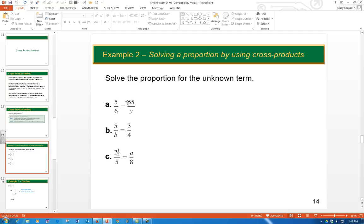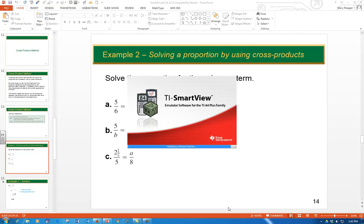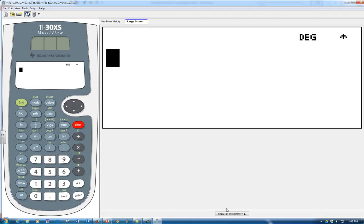We also want to take a look at one that has a mixed number in it just to make sure that you can do this. So we would need to take 2 1/2 times 8 and 5 times a. So what we're going to do is take our calculator and do the 2 1/2 times 8.